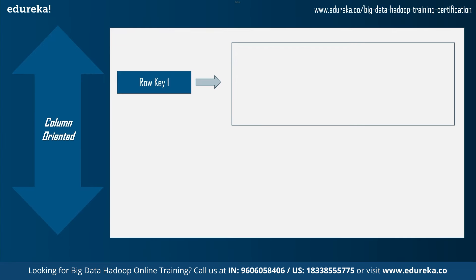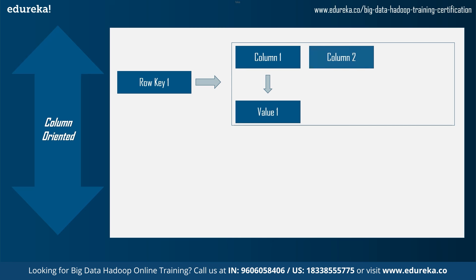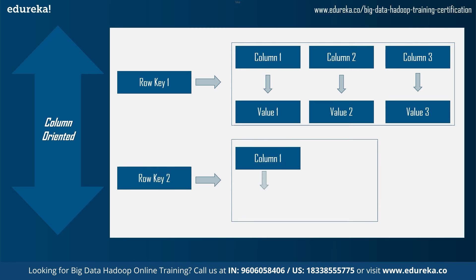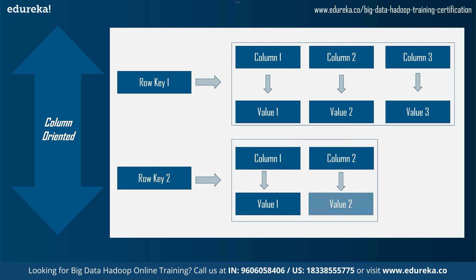In the column-oriented demo, we have row keys associated with columns. Row key 1 is associated with column 1 (value 1), column 2 (value 2), and column 3 (value 3). Row key 2 is associated with column 1 and column 2, having value 1 and value 2 respectively. Row keys are for grouping the columns, but actual data is stored in the columns.